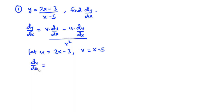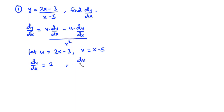du/dx means we find the derivative of u with respect to x. Since u equals 2x minus 3, when you differentiate 2x you get 2, and when you differentiate negative 3, which is a constant, you get zero. So du/dx equals 2. And dv/dx equals 1, because when you differentiate x you get 1 and when you differentiate negative 5 you get zero.